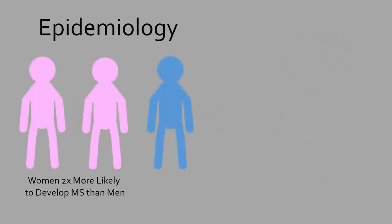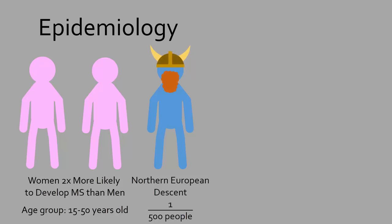Women are twice as likely to suffer from MS than men, with the disease affecting people between 15 and 50 years old. MS is most common in people of Northern European descent, with around 1 in 500 people, compared to 1 in 10,000 for other ethnicities.